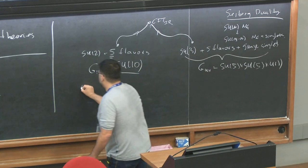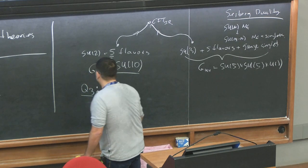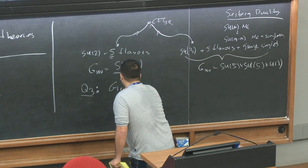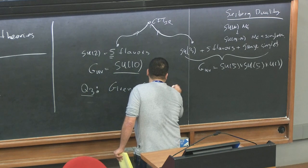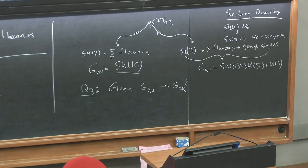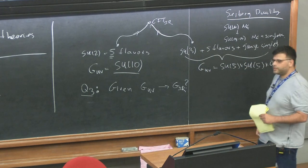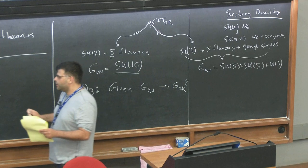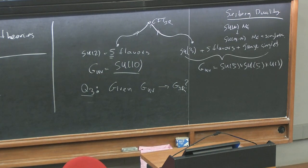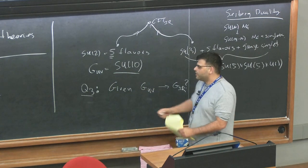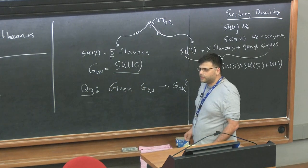There are many known examples of symmetry enhancement. Question number three, which we will have some partial answers to, is: given G_UV, what is G_IR? How can we determine the infrared symmetry starting from the UV symmetry? I will not give you a complete answer—I cannot tell you for a given gauge theory with certain group and matter content what the symmetry in the infrared will be—but we will build a framework where you can ask these types of questions.